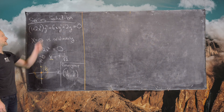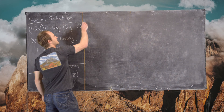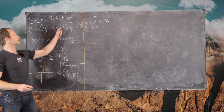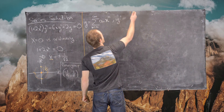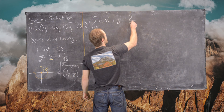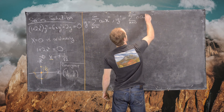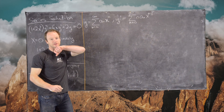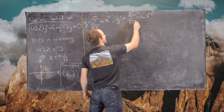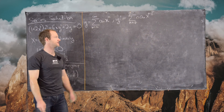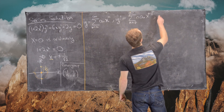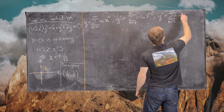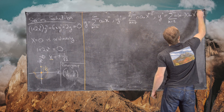Now let's find a solution. We set y equal to the sum from n equals 0 to infinity of a sub n times x to the n. The derivative is y prime equals the sum from n equals 1 to infinity of n times a sub n times x to the n minus 1 — we start at n equals 1 because the n equals 0 term contributes nothing. Then y double prime equals the sum from n equals 2 to infinity of n times n minus 1 times a sub n times x to the n minus 2.